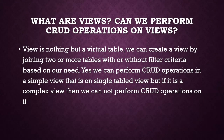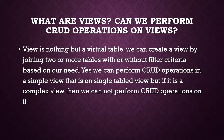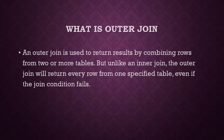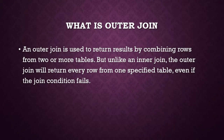SQL questions: What are views and can we perform CRUD operations on them? A view is a virtual table — we can create a view by joining two or more tables with or without filter criteria. We can perform CRUD operations on a simple view (single table view), but not on a complex view. What is a Cartesian product? It refers to a cross join — it returns all rows from all tables listed in the query. What is an outer join? An outer join returns results combining rows from two or more tables, but unlike an inner join, it returns every row from one specified table even if the join condition fails.